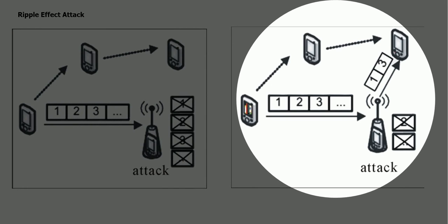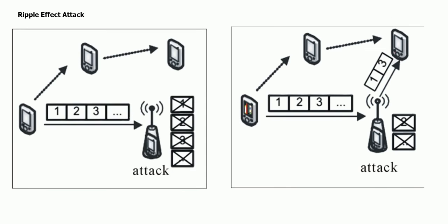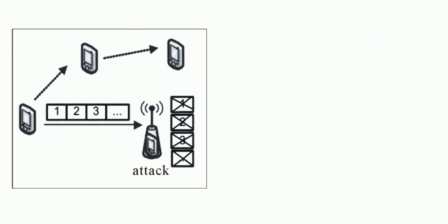Specifically, every node gets data from the secondary cognitive radio base station about the state of the network and the state of the free spectrum. Nodes closer to the spectrum have the responsibility to disseminate this information among the other nodes. What the attacker does is change this information and propagate it to the next hop. The next hop gets the wrong information, and thus wrong information is propagated across the entire network, destabilizing it. Such attacks are known as ripple effect attacks.